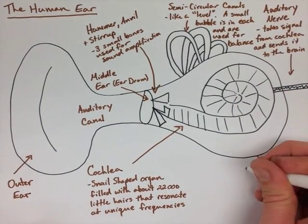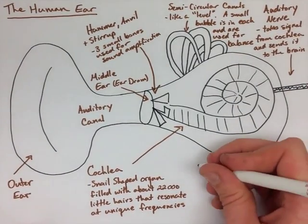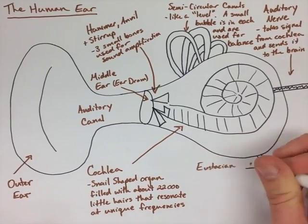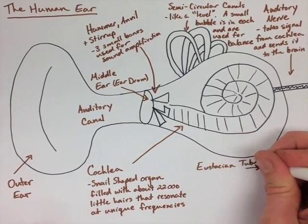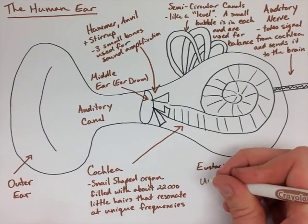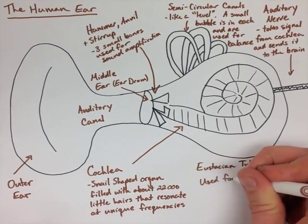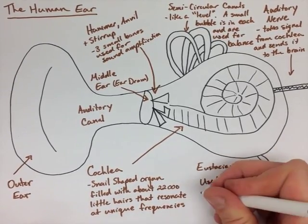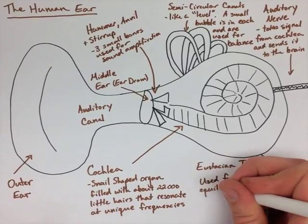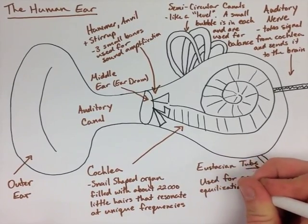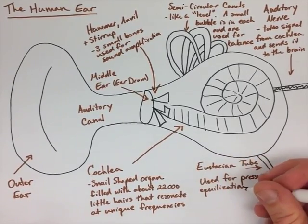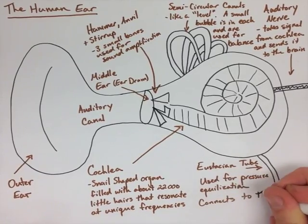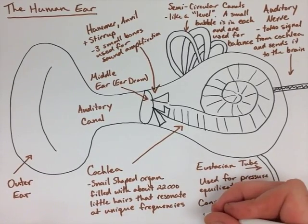The last thing we're going to look at is the eustachian tube. Now this is used for pressure equalization, and it's connected to our nose and throat. This is when you go up really high or go down really low and you have to pop your ear so that your head doesn't hurt anymore — you're equalizing the pressure using the eustachian tube.